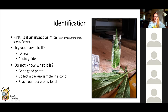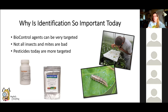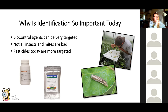ID is becoming more and more important because biocontrol agents are very targeted. In aphid management it's a lock-and-key system with parasitoids — certain parasitoids only hit certain aphids. Also, not all insects and mites are bad. Several times this year people sent me pictures of what looked like a caterpillar — it was actually a syrphid fly larva, predatory on aphids. Growers have sprayed these thinking they were pests, killing their free workforce.